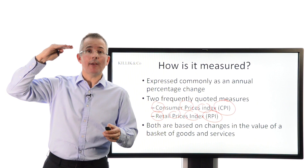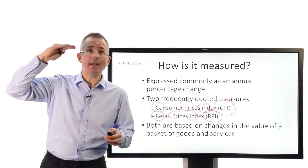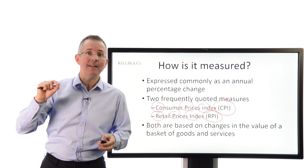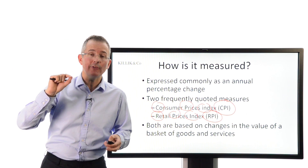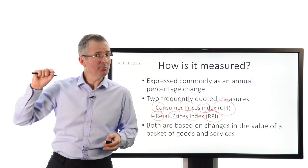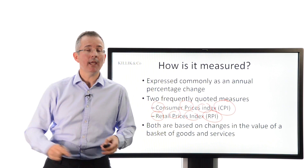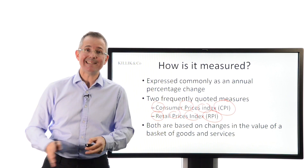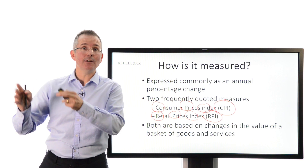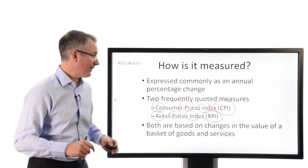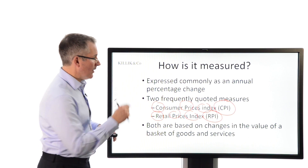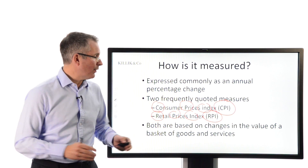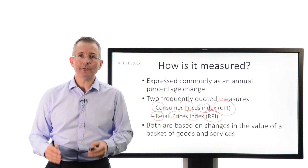Usually the CPI is known as the headline number, and that's the one that the Bank of England pays the closest attention to when setting interest rates. But the RPI was, until the CPI replaced it, the UK's standard measure of inflation. Both are based on changes in the value of a basket of goods and services.